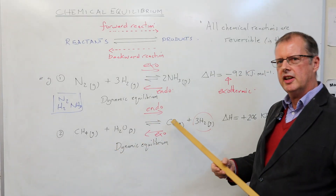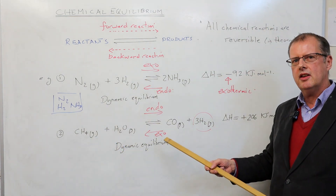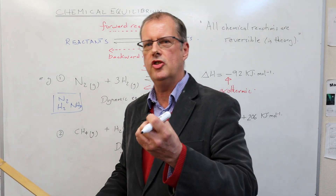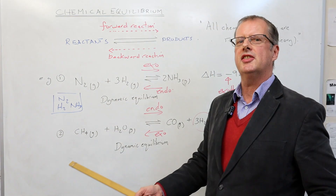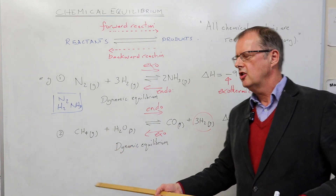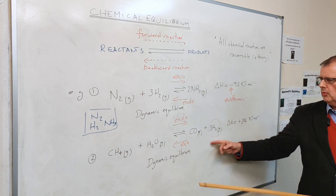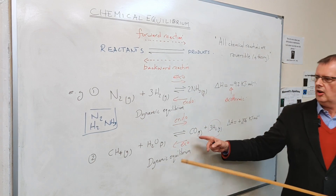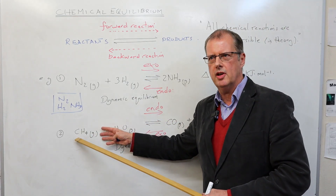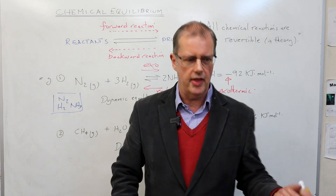Looking at the second system, if we increase the pressure, it will move to the side that tries to reduce the pressure. In this reaction it can reduce pressure by moving to the left, because there are four molecules on the right and two on the left. So we are able to manipulate the position of equilibrium quite flexibly by changing temperature and pressure.